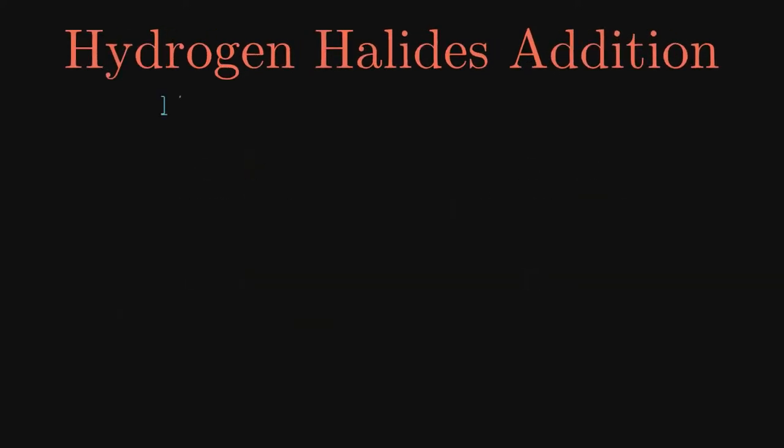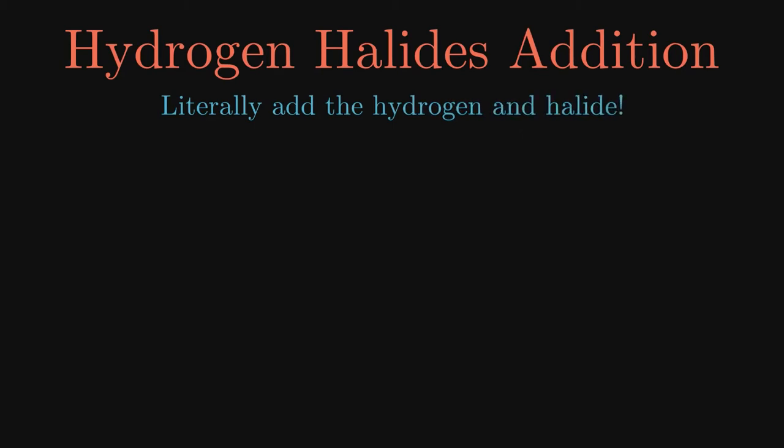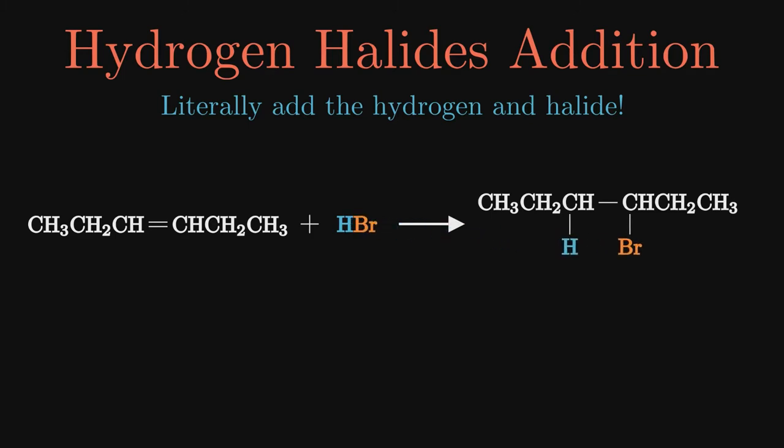When I said addition a moment ago, I really meant it. The entire hydrogen halide is literally added to the alkene. As you can see in these examples, the double bond disappears and the hydrogen adds to one of the original sp2 carbons and the halide to the other.